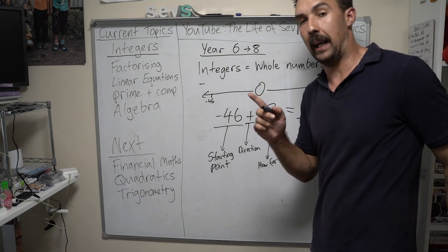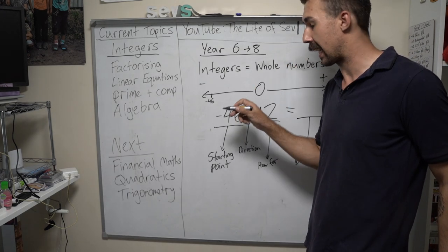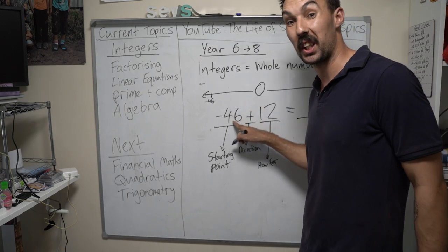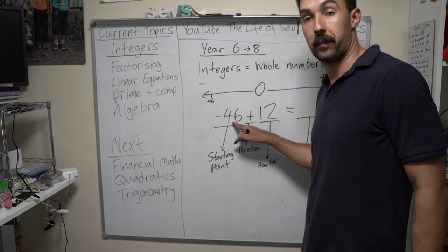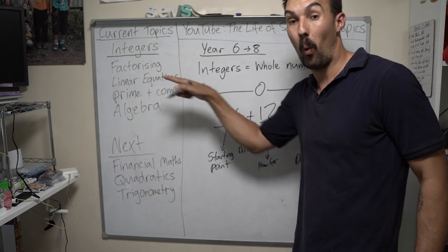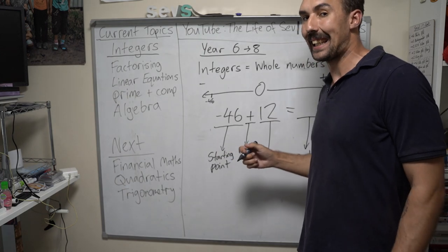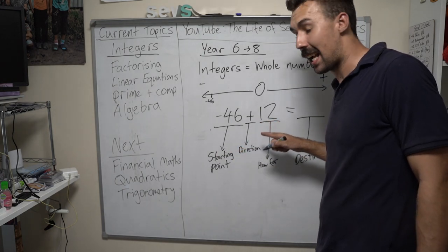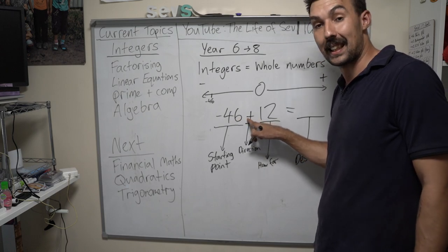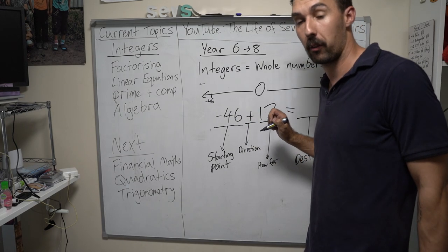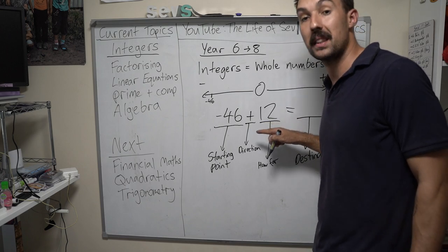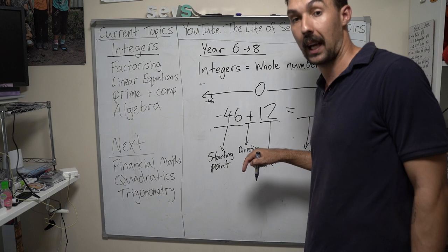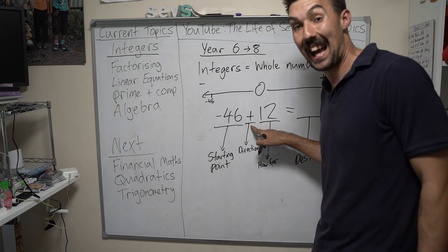Here's the tricky bit. A lot of students think that when we add to a negative, this number is going to go up. No. Because it's a negative, it actually goes up more to the negative. We're not adding a negative — we're adding a positive. This actually says negative 46 plus positive 12. When we do positive numbers, we don't have to put a positive in front of the 12. That there means add.